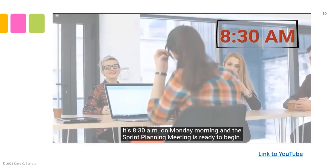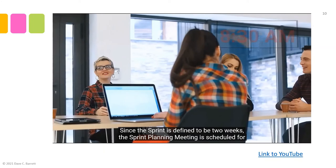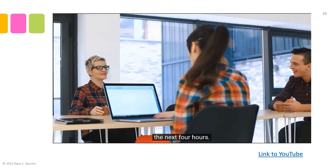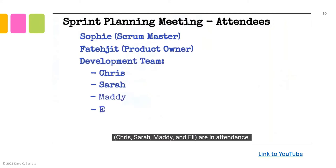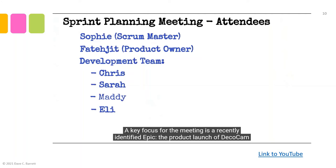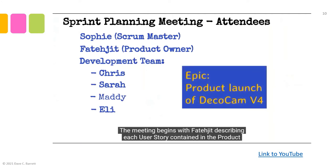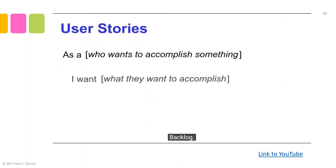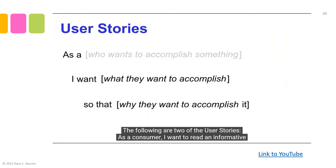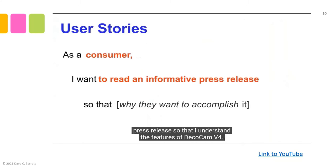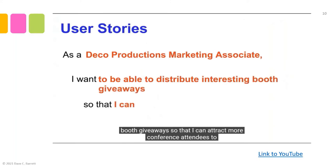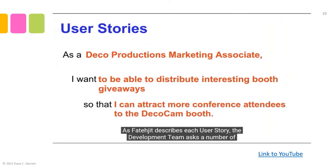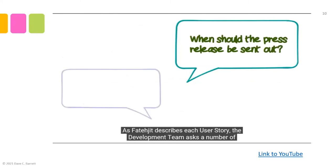It's 8:30 a.m. on Monday morning and the sprint planning meeting is ready to begin. Since the sprint is defined to be two weeks, the meeting is scheduled for the next four hours. Sophie the scrum master, Fadijit the product owner, and the development team — Chris, Sarah, Maddie, and Eli — are in attendance. A key focus is a recently identified epic: the product launch of Deco Cam version 4. The meeting begins with Fadijit describing each user story in the product backlog, including: 'As a consumer, I want to read an informative press release so that I understand the features of Deco Cam version 4,' and 'As a Deco Productions marketing associate, I want to distribute interesting booth giveaways so that I can attract more conference attendees to the Deco Cam booth.' As Fadijit describes each user story, the development team asks clarifying questions.